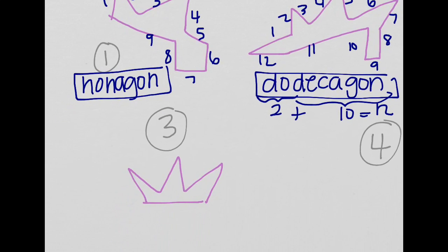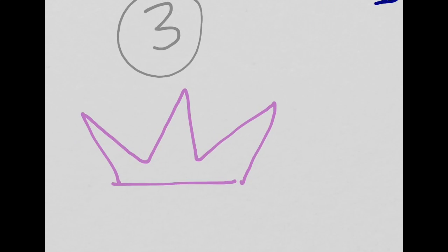Now let's look at this guy, number three. Let's count up the number of sides. One, two, three, four, five, six, seven. Well, seven is septagon.